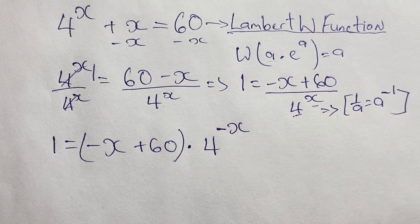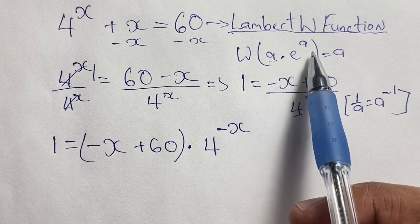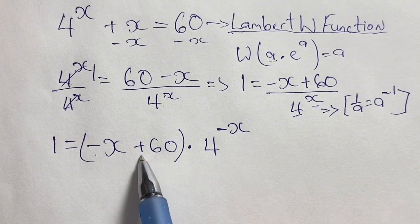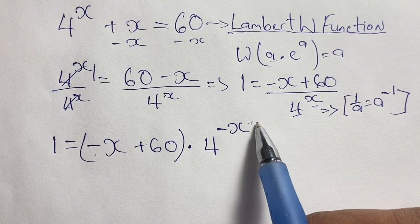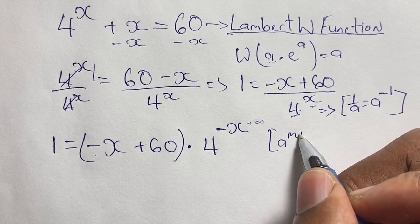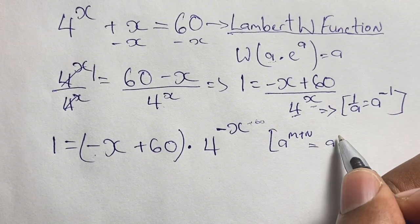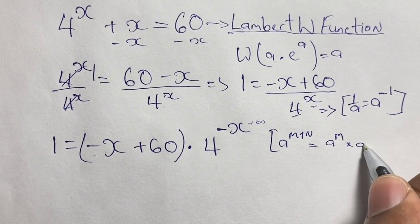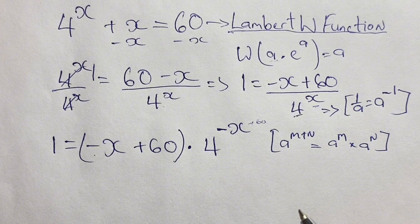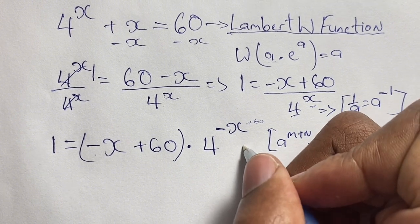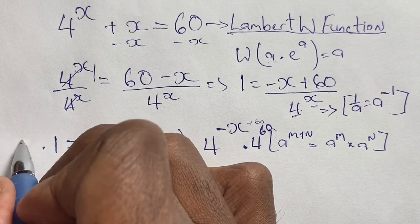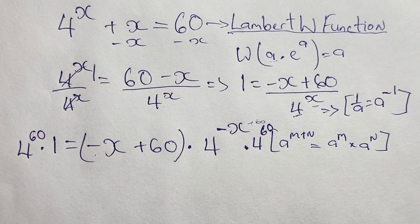Continuing to write our equation in the form a times e to the power of a, we see negative x in the power but also plus 60. Using the law of indices where a to the power of m plus n equals a to the power of m times a to the power of n, we multiply both sides by 4 to the power of 60 to balance the equation.